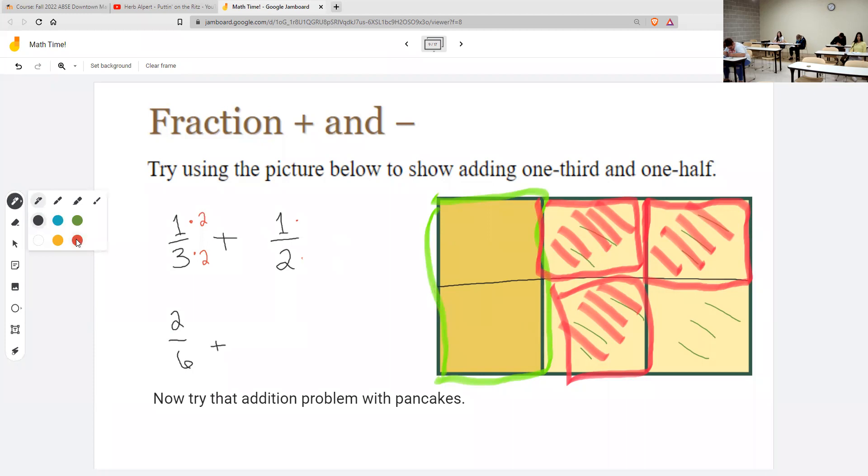Then I want six on the other side. So what do I multiply the two by? Three. And then to be fair, I have to multiply the top. So that turns into three-sixths. That's the red ones. And then when I'm done, I have five of the six.